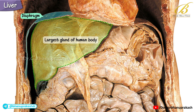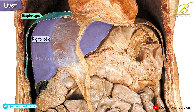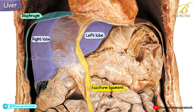In this illustration, you can see the anterior part of the right and left lobes of the liver. Both lobes are separated by a thin fold of peritoneum called the falciform ligament. This ligament attaches the liver to the anterior abdominal wall and the diaphragm.